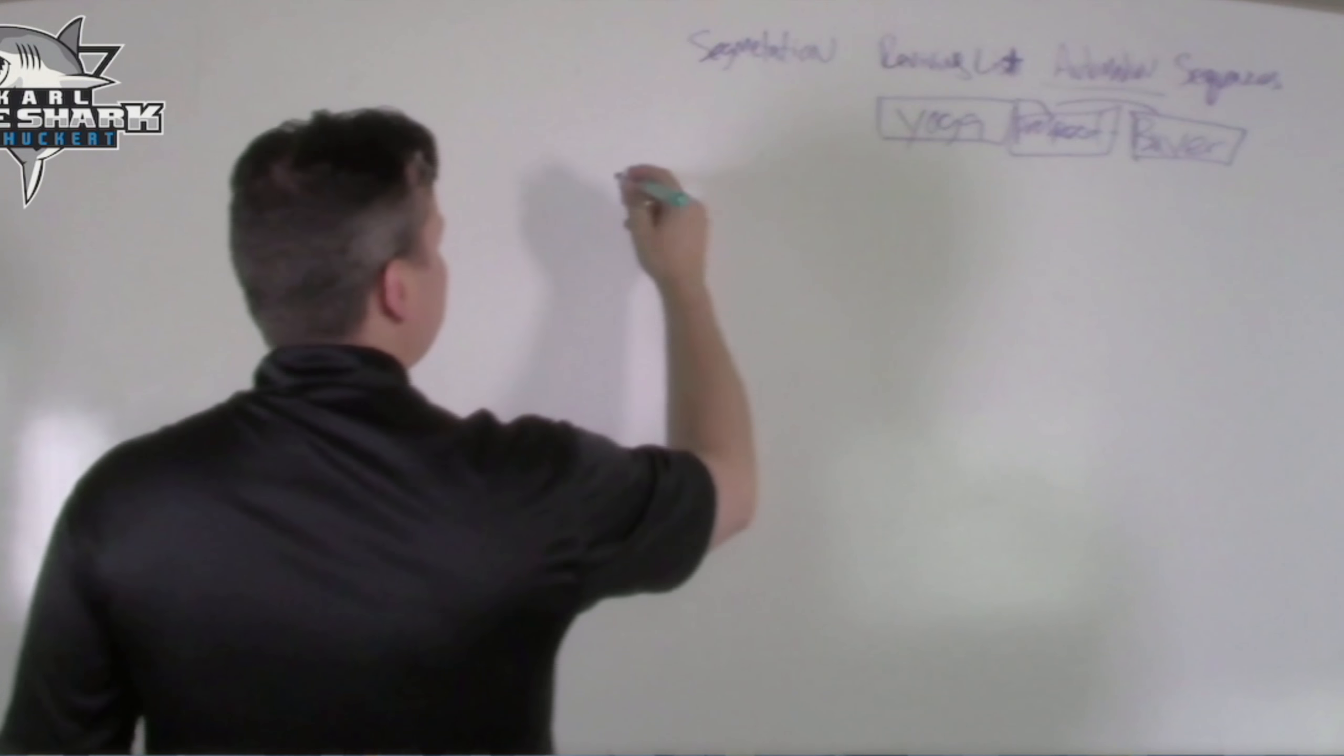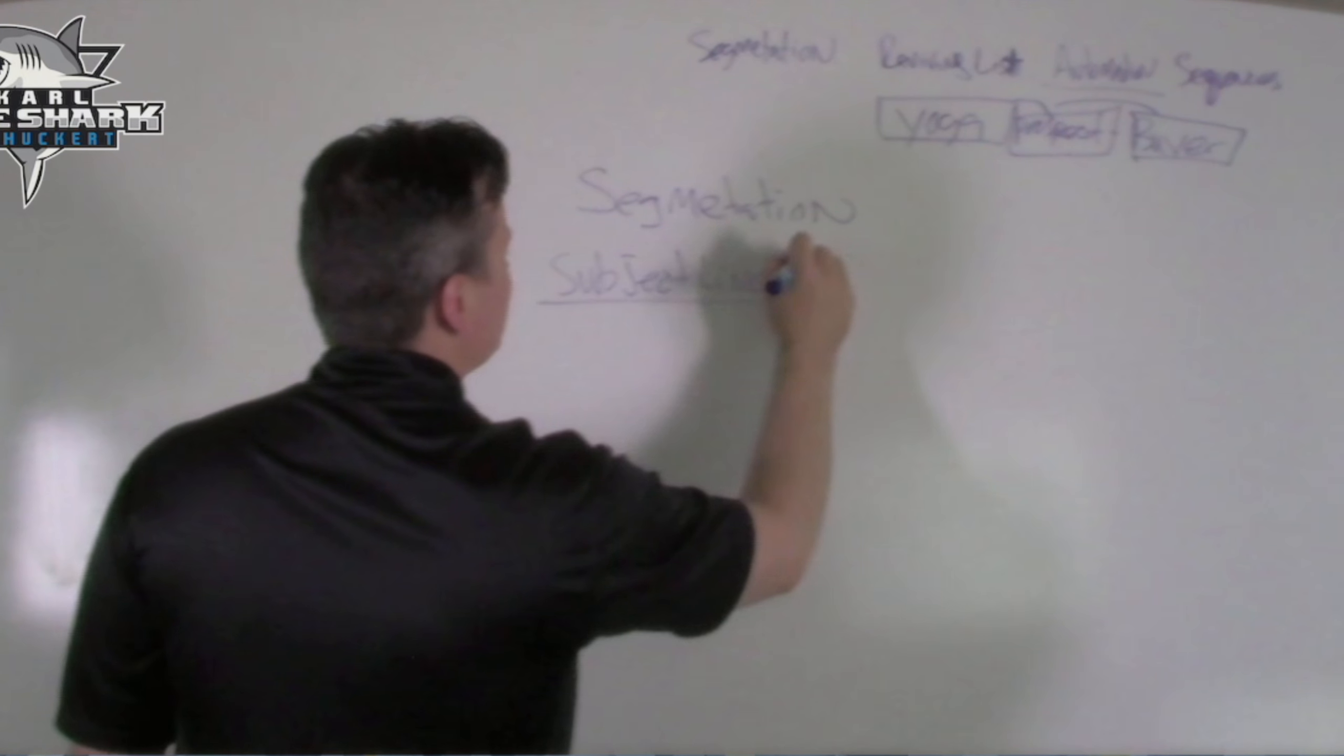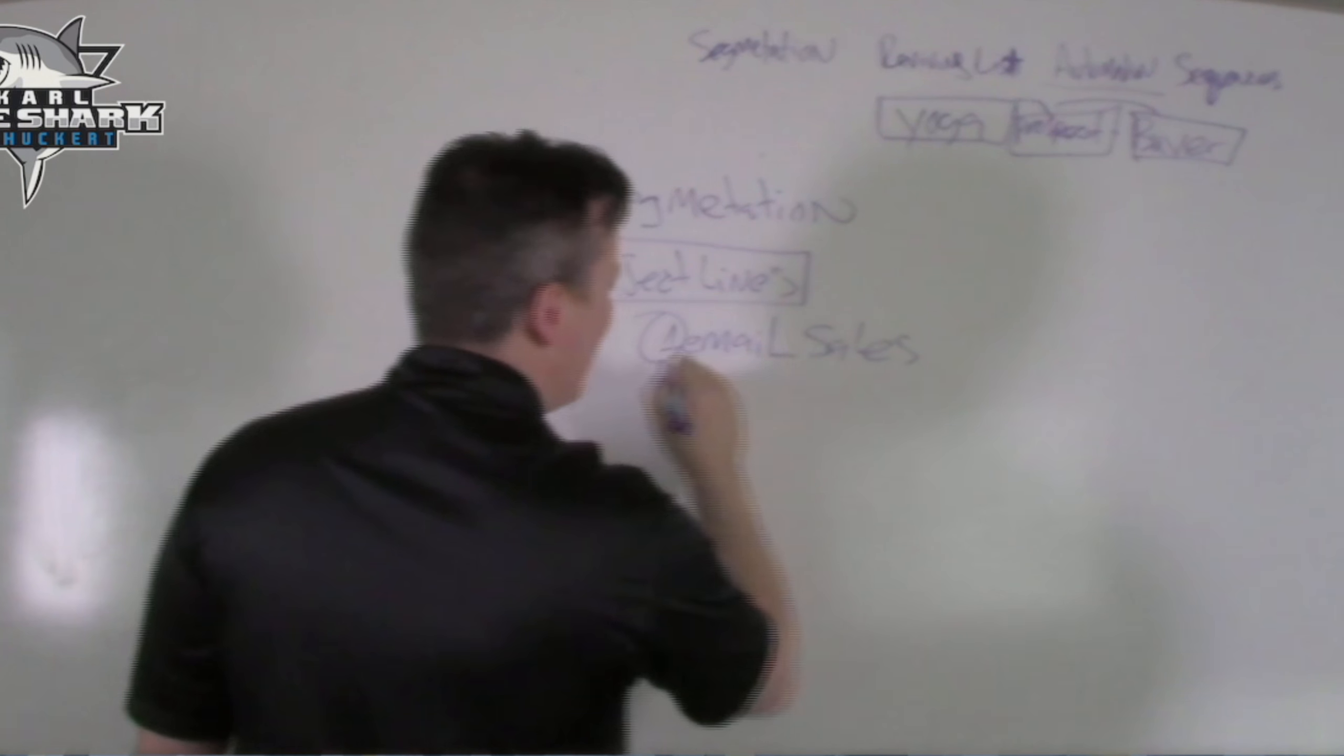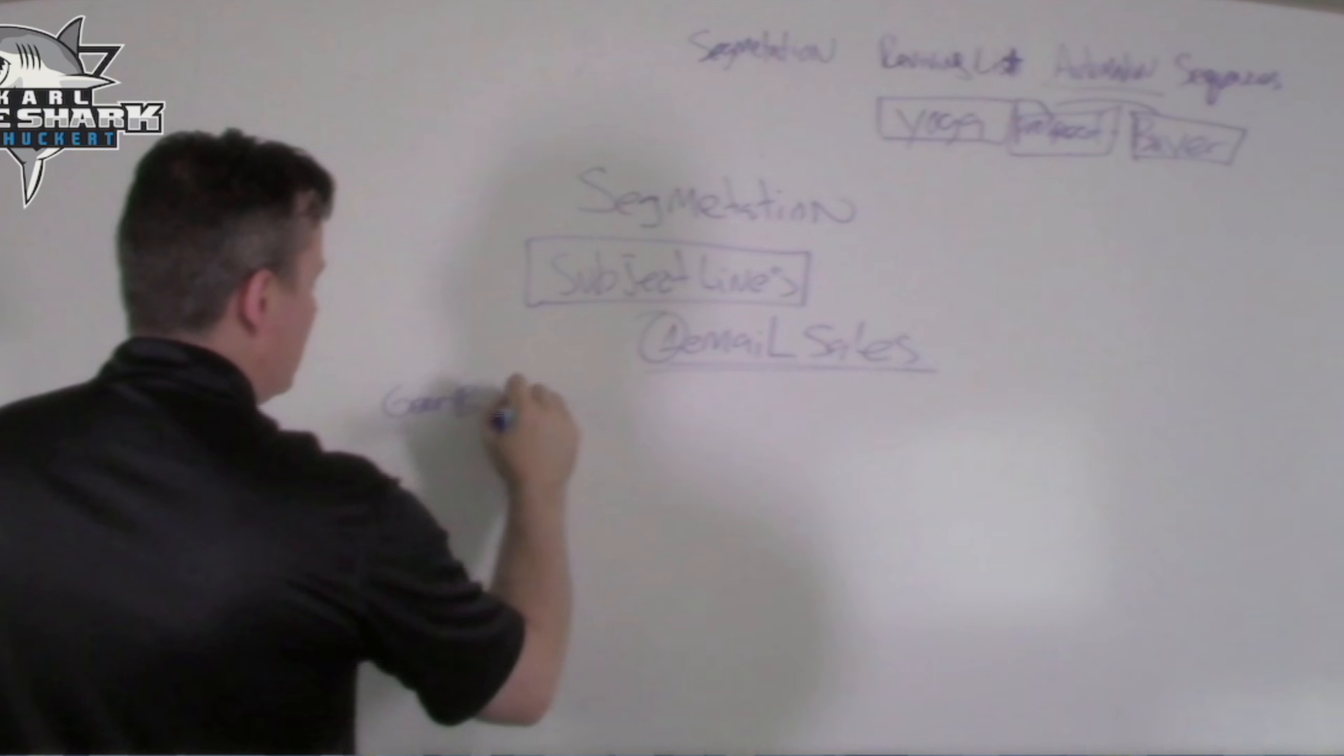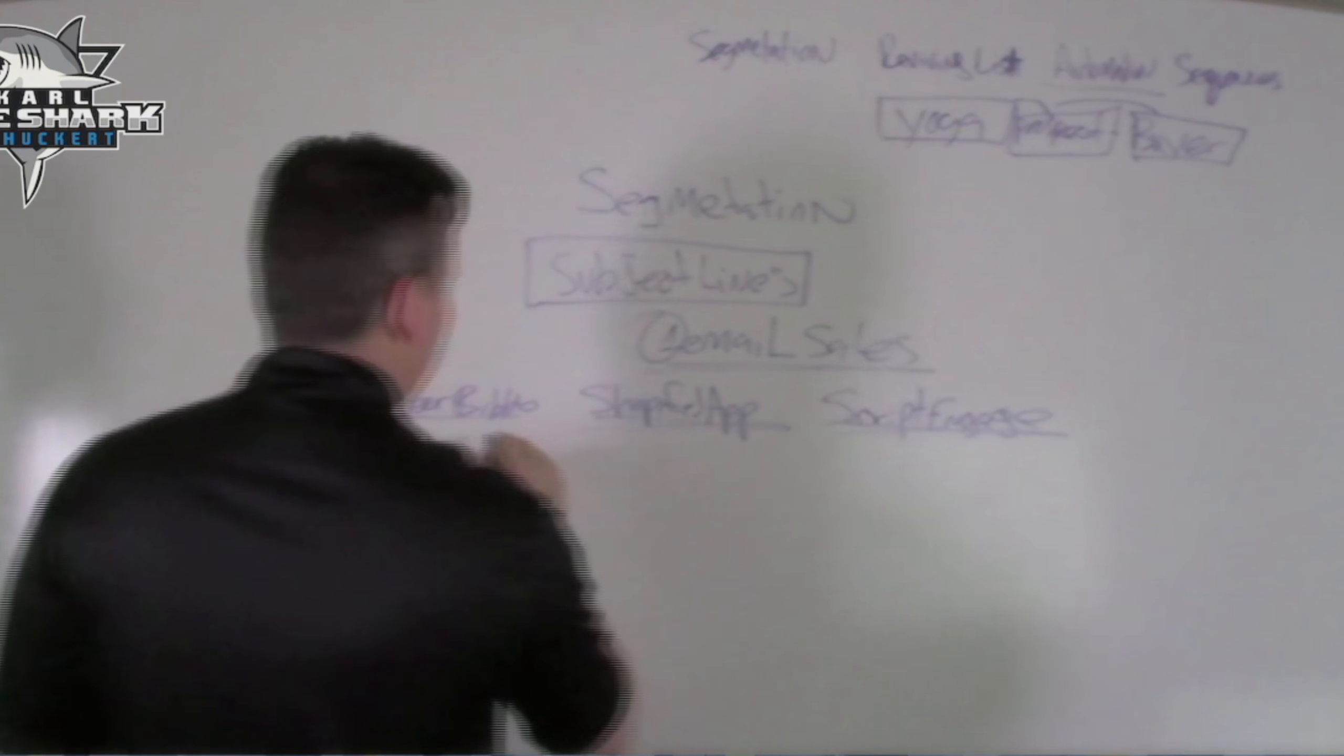Something you can do with segmentation is have all of your subject lines tailored to where subscribers came from. Instead of sending one general email to everyone, as an affiliate marketer I might have done a promotion for GearBubble, one for Shopify App, and one for Script Engage. Knowing that my list came from these places, it would actually help me if I put that into the subject line.